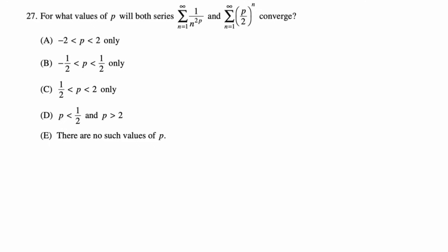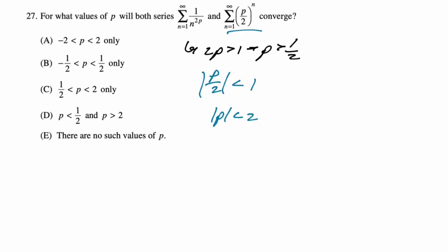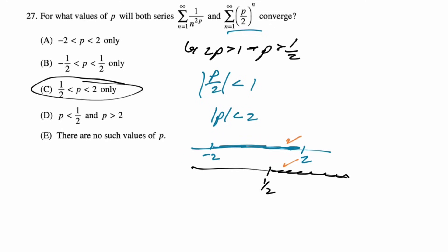For what values of P do both series converge? The first is a p-series: 1/n^(2P), so we need 2P > 1, meaning P > 1/2. The second is geometric with ratio P/2, so we need |P/2| < 1, meaning |P| < 2, i.e., −2 < P < 2. Combining both conditions: P must be in (1/2, 2). Answer is C.